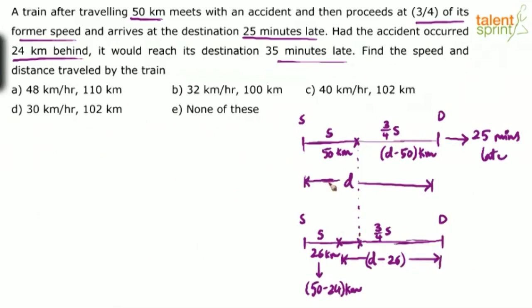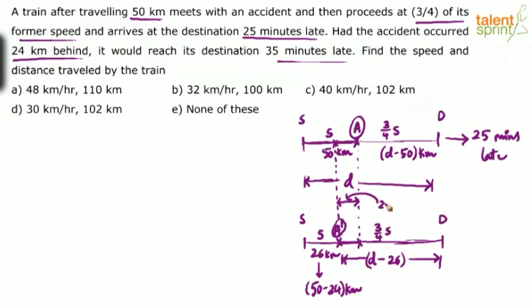Now focus on the stretch between the two accident points. In the first case, the accident point A is at 50 kilometers; in the second case, accident point A-dash is at 26 kilometers. The distance between these two points is 50 minus 26 = 24 kilometers.